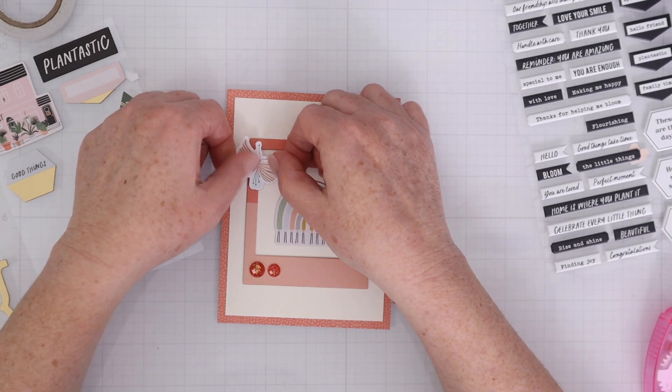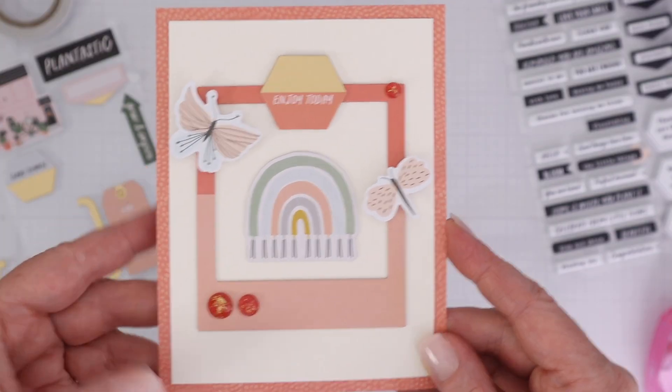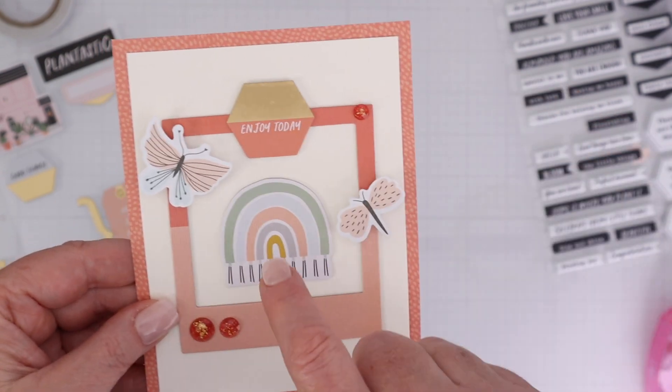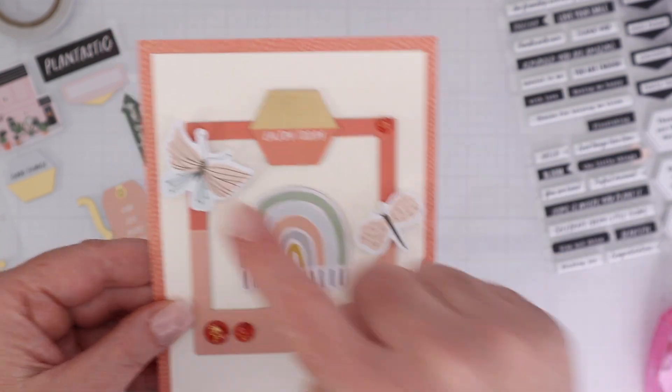Again, I have die cuts, chipboard stickers, chipboard frames, cardstock, pattern paper, and gems all on one card, but it doesn't look too busy. It's pretty clean and simple, and it was really easy to make.